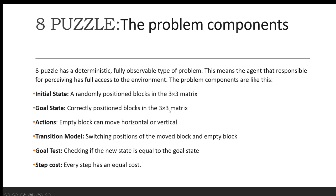Your goal state is a 3 by 3 matrix. Actions: what is your action? You have to move the empty block horizontal or vertical. Transitions: you have to switch the block to empty block. Goal: checking if the new state is equal to the goal state. Step cost: if every step is cost 1, when you put steps to reach the goal, then the total cost will calculate.